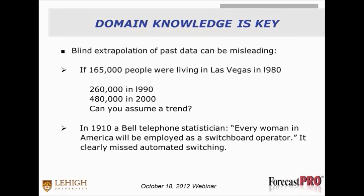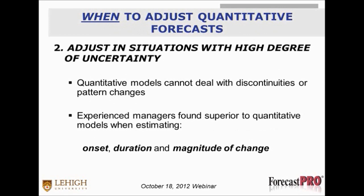To illustrate how important domain knowledge is: if we just used blind extrapolation of past data — 165,000 people were living in Las Vegas in 1980, 260,000 in 1990, 480,000 in 2000 — can we assume a trend? We all know what actually happened in Las Vegas. Another example: in 1910 a Bell Telephone statistician said, 'every woman in America will be employed as a switchboard operator' — clearly missing automated switching. These examples show why knowledge and judgment of managers is important: you can't just blindly follow the numbers.